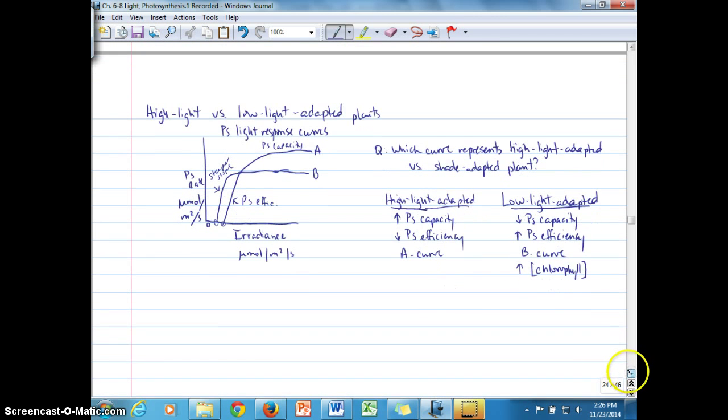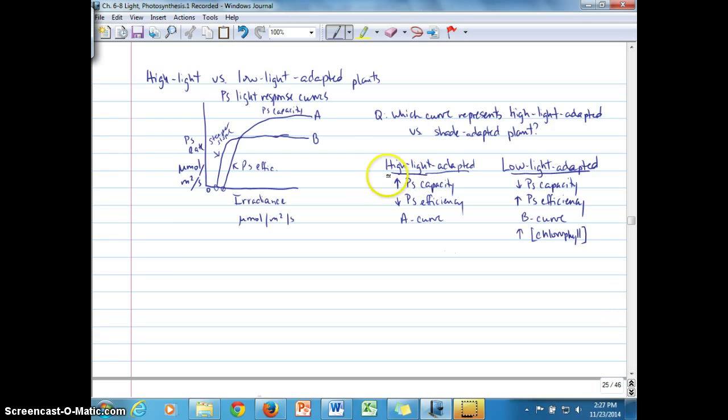So the question we might then ask with regard to photoinhibition is, which of these plants is more vulnerable to photoinhibition? So one of the things to realize when we're talking about the photosynthetic capacity of each of the, or photosynthetic efficiency rather of each of these, the plant that's under high light exposure has to come up with all these different ways, these mechanisms that we've been talking about to prevent photoinhibition on a chronic basis.